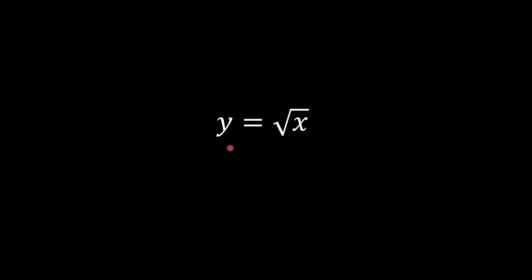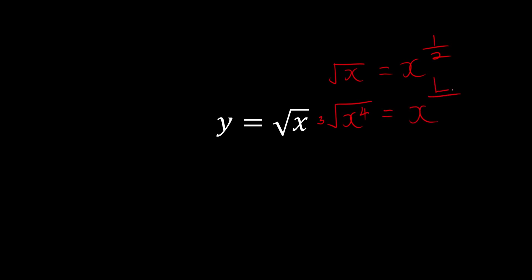Now let's say we have y equal to the square root of x. When we see a radical form, we convert it to index form so we can use the power rule. As we know, the square root of x is equivalent to x to the power of 1 over 2. What if we have something with a higher power, like the cube root of x to the power of 4? In index form: whatever is on top is the power — so power of 4 — and whatever root it is becomes the denominator, giving x to the power of 4 over 3. Similarly, the 5th root of x to the power of 7 becomes x to the power of 7 over 5.